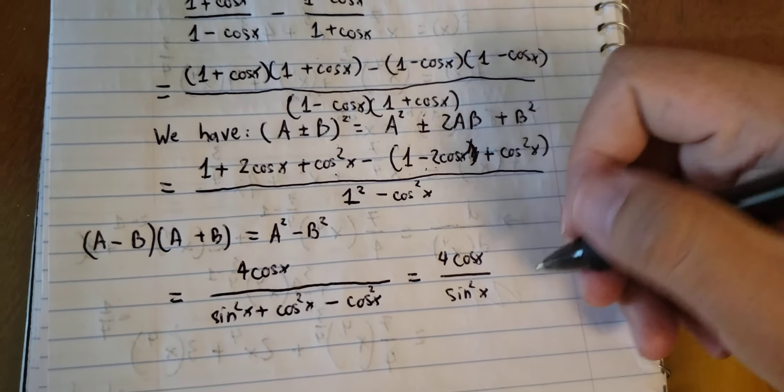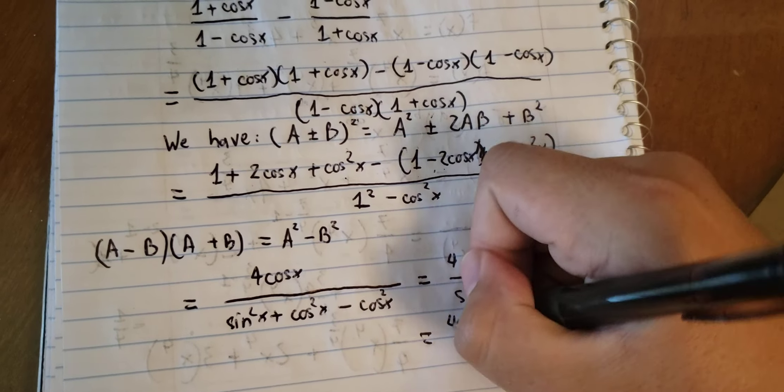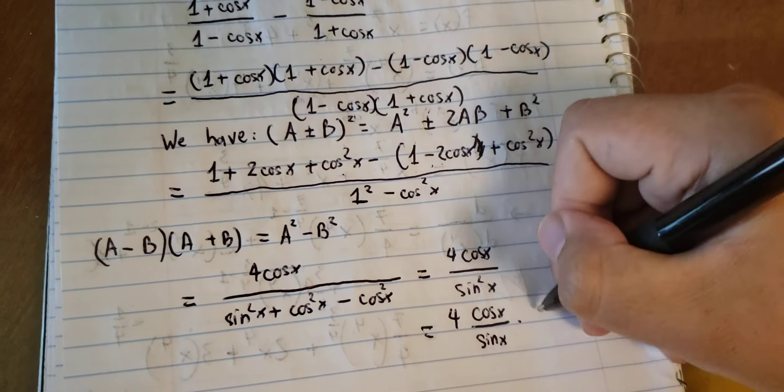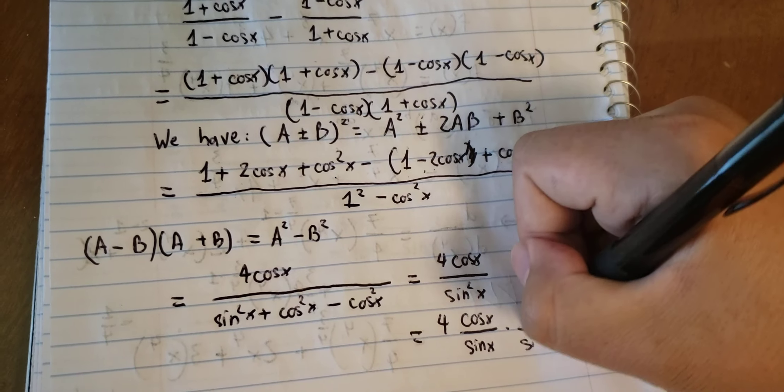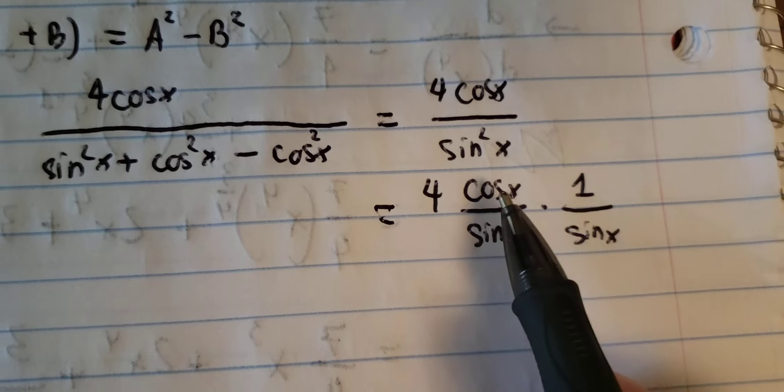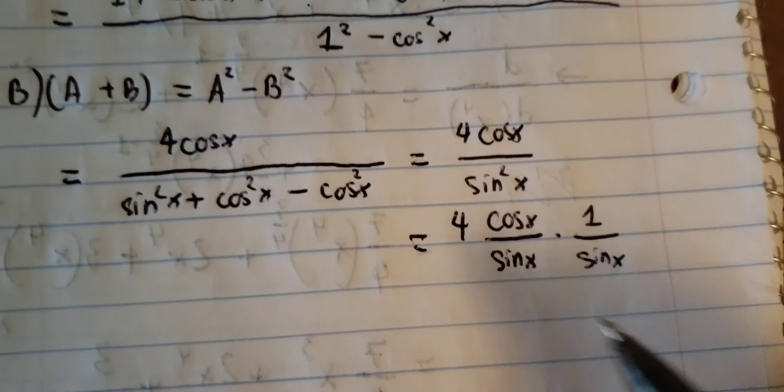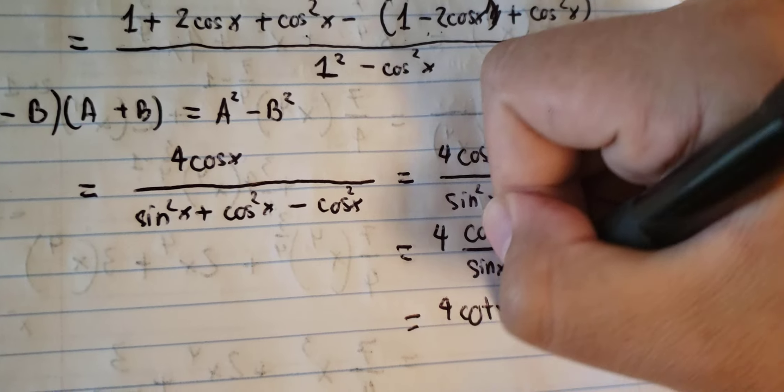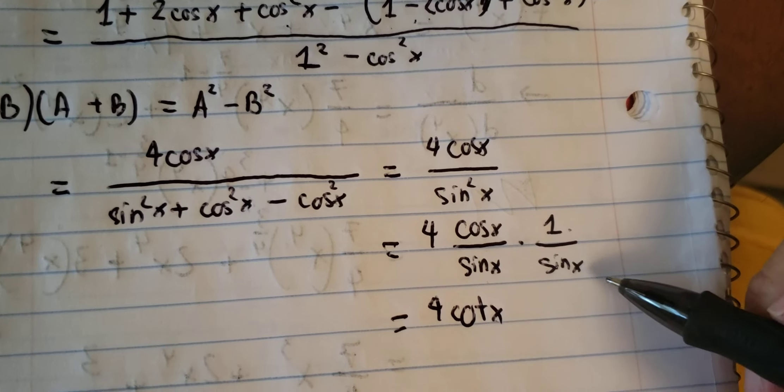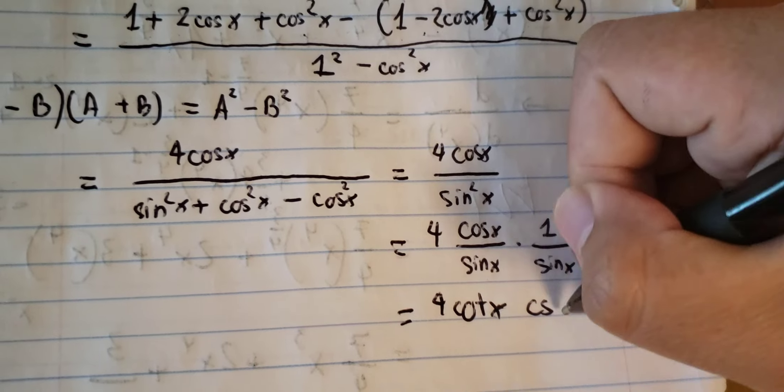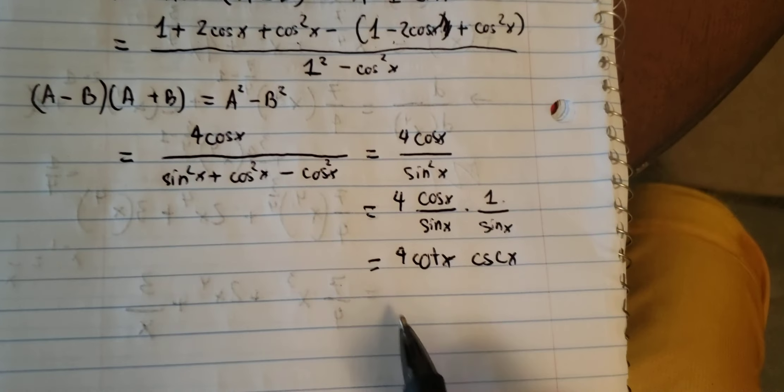Next. We can see that cos x over sin x, that is cotangent x. 1 divided by sin x, we have cosecant x. And this is the answer.